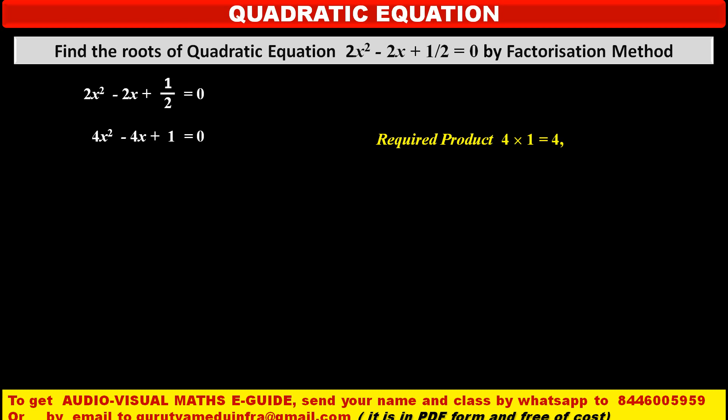Keep in mind, it is positive 4. That means both the numbers are either positive or both the numbers are negative. And middle term is minus 4. So, middle term is negative. That means we require two negative numbers. Because we want here two negative numbers to get their sum as minus 4 as a middle term.